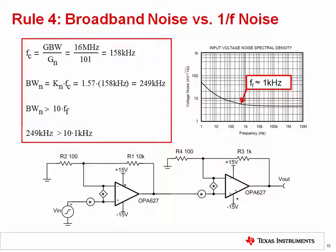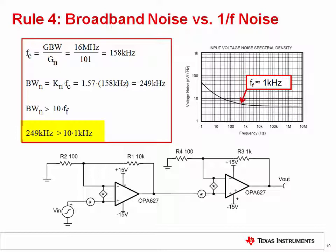Now let's see if we can ignore the 1/f noise. In this example, the 1/f noise corner can be graphically estimated to be about 1 kHz. You could use the equation given earlier to find the precise location of the noise corner, but the estimate is sufficient when using Rule 4. After finding the noise corner, we need to know the noise bandwidth. Using the gain bandwidth product and the noise gain, we find that the bandwidth is 160 kHz. The noise bandwidth is then calculated with a factor of 1.57 for a first order brick wall filter correction, as discussed in a previous video. The noise bandwidth comes out to 249 kHz, which is much higher than the noise corner at 1 kHz. Thus, for this example, we can ignore the 1/f noise. This rule also keeps you focused on what is important — the 0.1 Hz to 10 Hz noise waveform is really just a way of looking at the 1/f noise, and this curve is not relevant if the broadband noise is dominant.